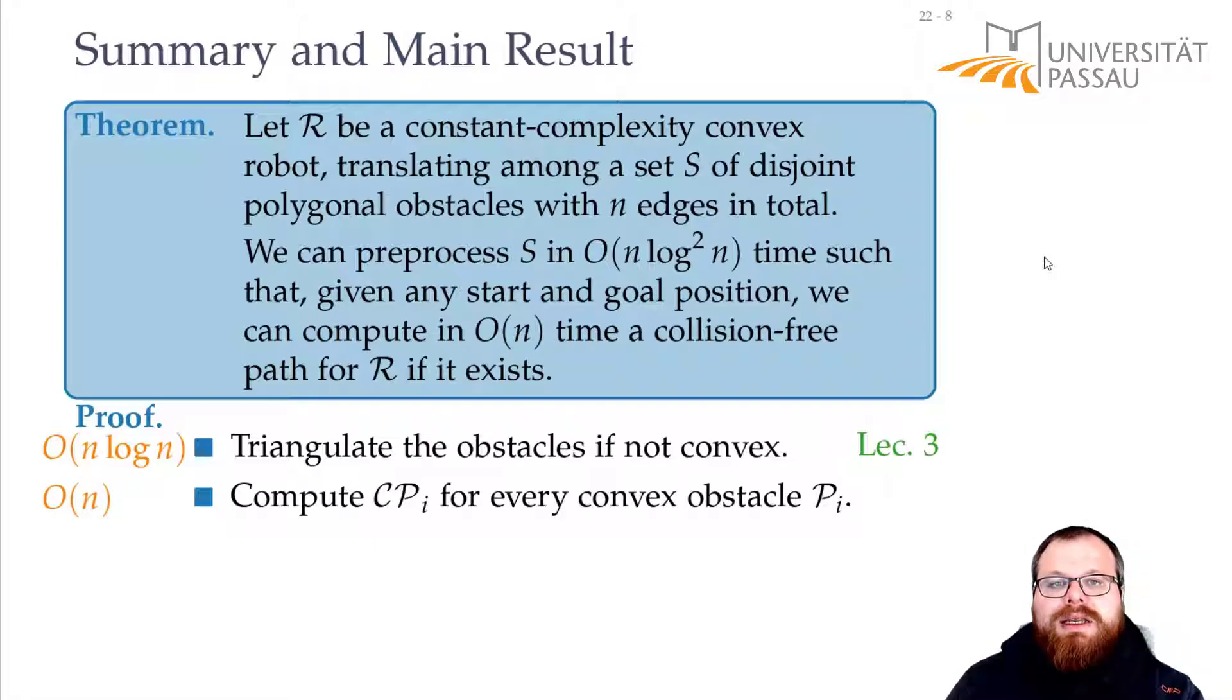And this we can do in linear time. So, the complexity from the first to the second part, it increases, because if we triangulate an obstacle, then we might get several obstacles, and some corners belong to many of them. They are only interior disjoint, but not boundary disjoint.